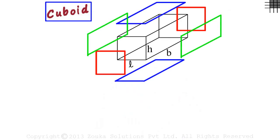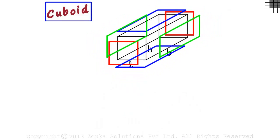How do we find the surface area of a cuboid? This three-dimensional shape is called a cuboid. It is bounded by rectangles from all sides.